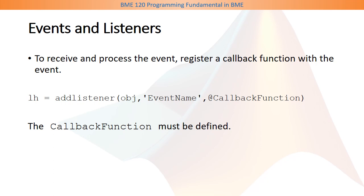In order to receive and process the event, you must register a callback function with the event in the destination data object. In the constructor of the destination data object, you use the function addlistener to register the callback function. The function takes the first input as the data object, the second input as the event name, and the third input as a handle to the callback function, which is also a method in the destination data object.